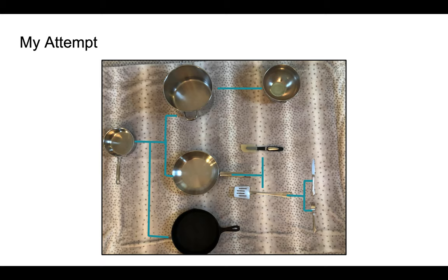Here is my attempt at a kitchen utensil phylogenetic tree. You can see that we have the saucepan evolving into the cast iron skillet, and then diverging into the pot and skillet through cladogenesis. Next, we see that the pot evolves into a bowl over time, and we see that the skillet diverges into a baking and cooking spatula, and the cooking spatula then diverges into a fork and knife.